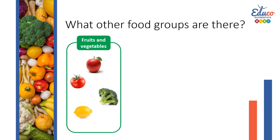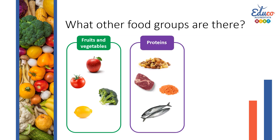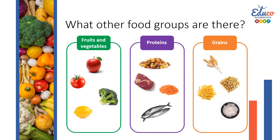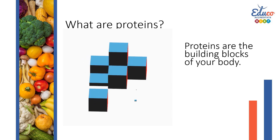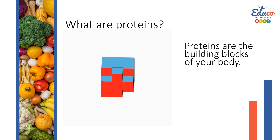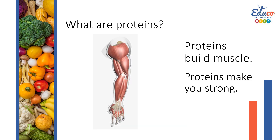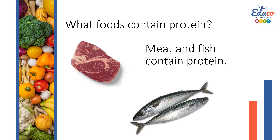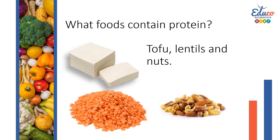What other food groups are there? Proteins. Can everyone repeat: proteins. Grains. Can everyone repeat: grains. What are proteins? Proteins are the building blocks of your body. Proteins build muscle. Can everyone repeat: muscle. Proteins make you strong. What foods contain protein? Meat and fish contain protein. Tofu, lentils, and nuts also contain protein.